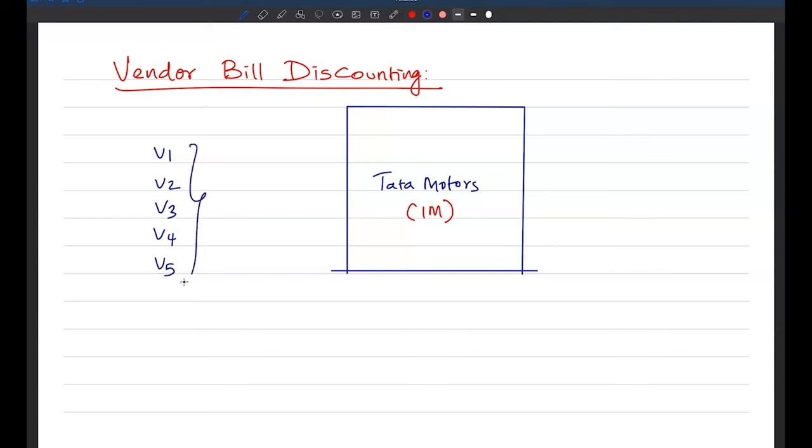So what will happen is these vendors, in their individual capacity, they'll be selling goods to Tata Motors, let's say on credit basis. They are selling on credit, and this credit can be, for example I'm assuming, 60 days credit. So on the 60th day when Tata Motors makes the payment, they'll get that money and they can continue their activity.